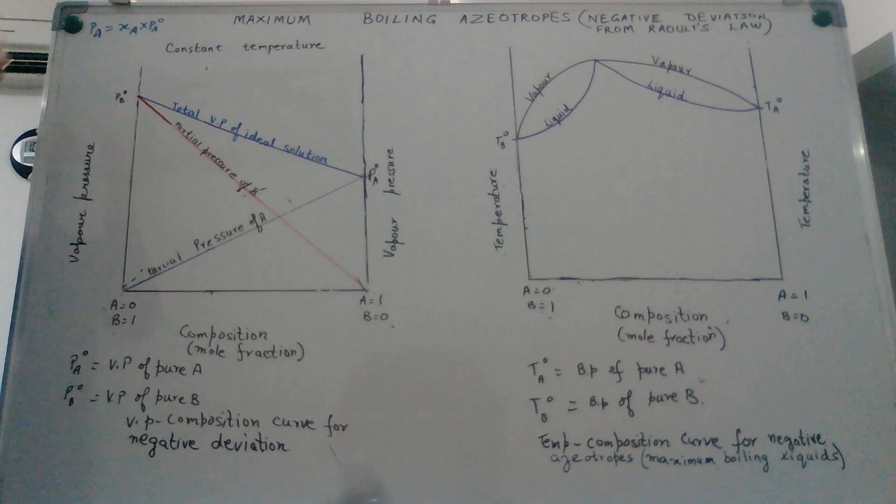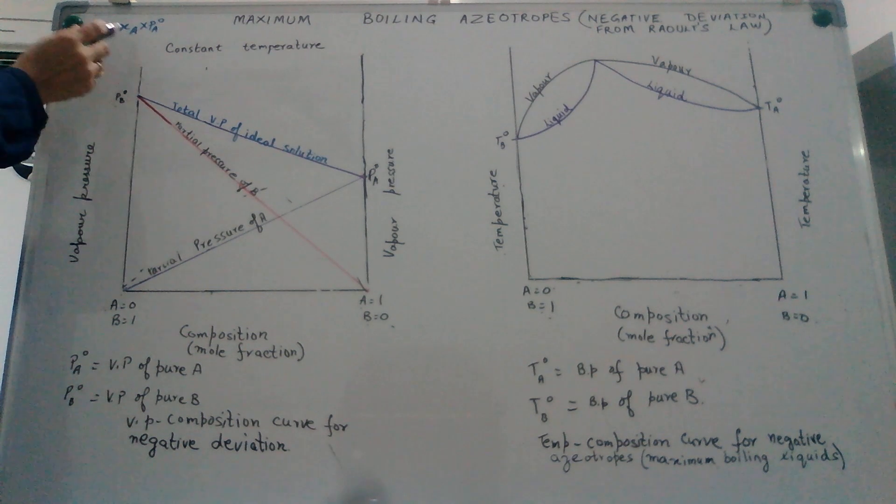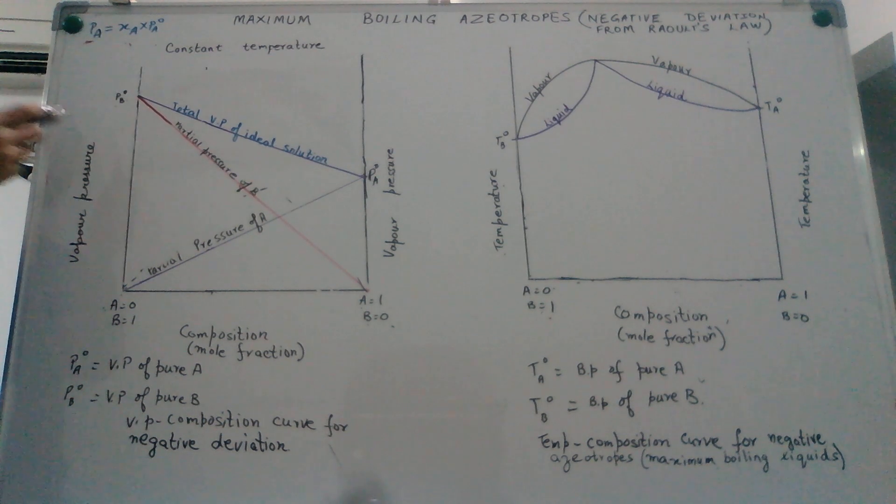What is Raoult's law? Revising it once, the vapor pressure of a component in a solution equals the product of its mole fraction in the solution multiplied by the vapor pressure of that substance in pure state.